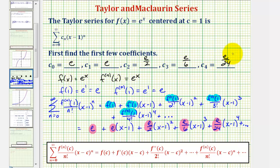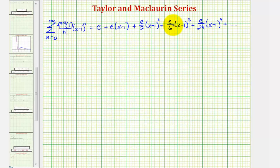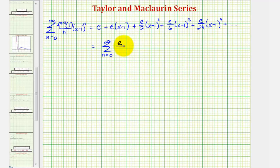A lot of times when we use this formula to find the Taylor series, we'll notice a pattern and can rewrite the formula in a more simplified form that doesn't require the derivative function. Since all the derivatives evaluated at one are equal to e, we could rewrite this series as the summation from n equals zero to infinity of e divided by n factorial times the quantity x minus one to the nth.